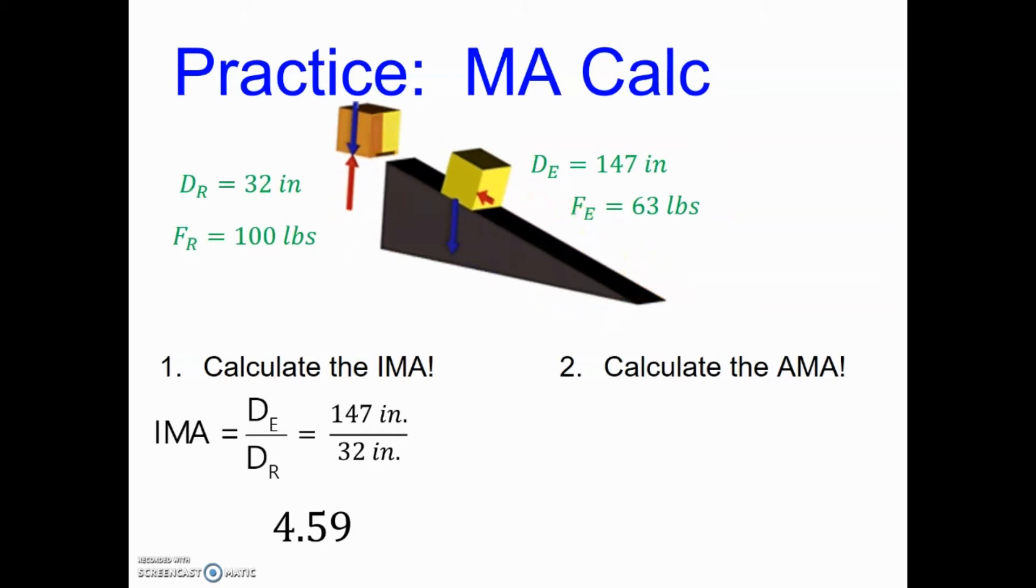Which means if I were to put one pound of force in there I should get around 4.6 pounds out of the deal. And that's pretty easy when we look at those two ratios.